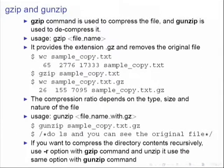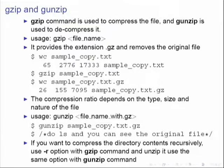Now run gzip sample1.txt. You will get another file which is sample1.txt.gz. The original file will be replaced with this compressed file. Then try wc sample1.txt.gz and you will see there is quite a large reduction in the number of lines and characters, showing the file has been compressed.